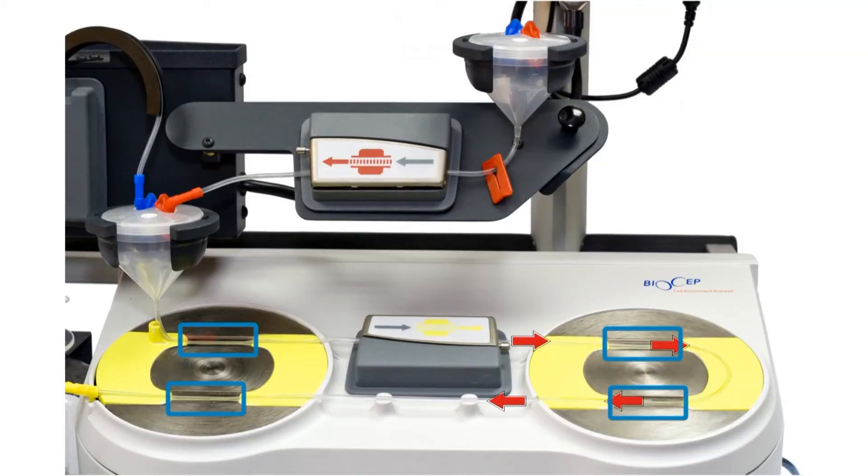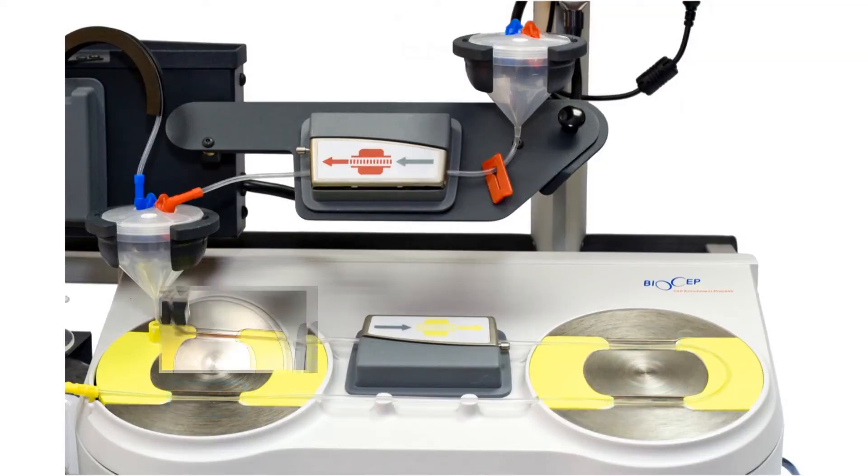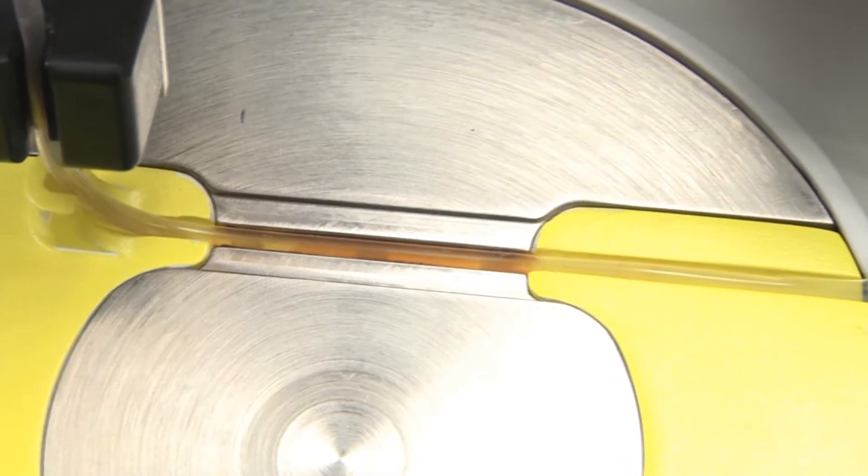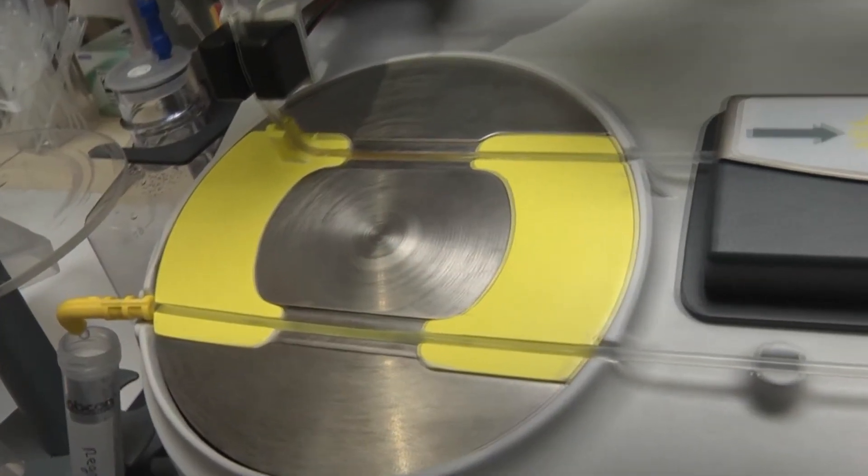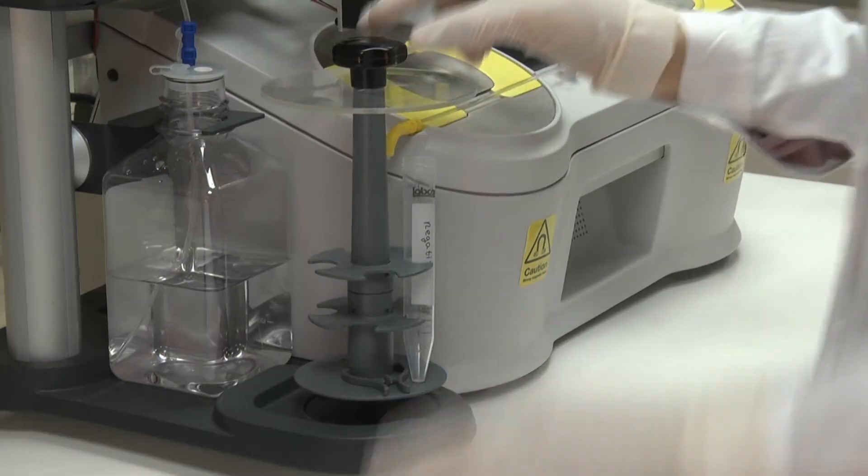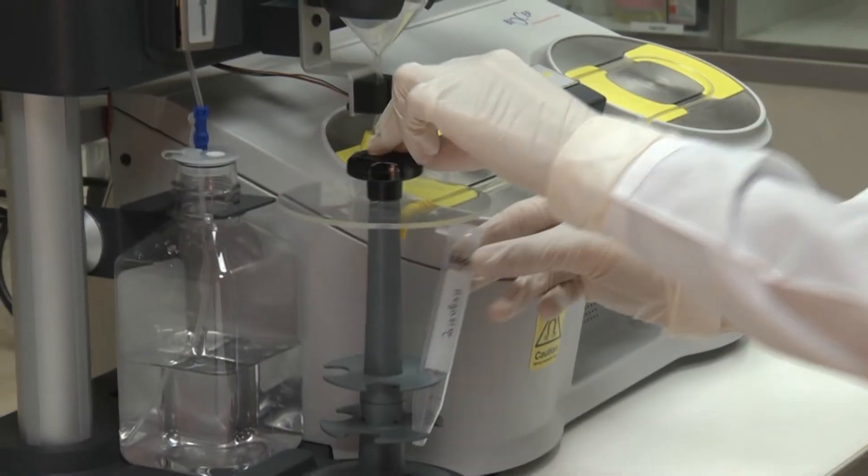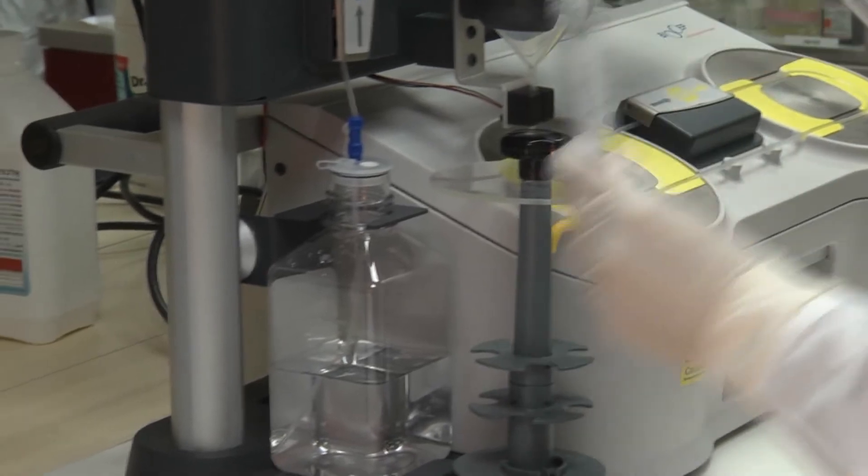The specimen flows through the system, with the immunomagnetically tagged cells remaining in stasis in one of the four isolation areas, until the entire specimen has passed through the system. Isolation is both simple and quick, typically 15 minutes from start to finish.